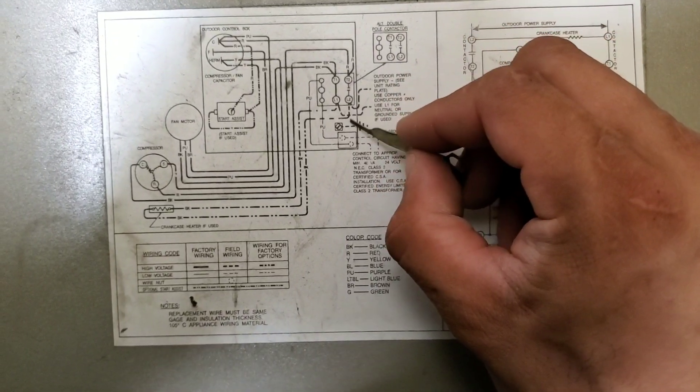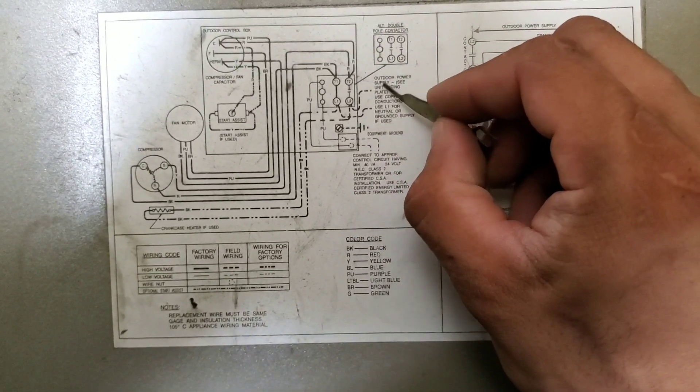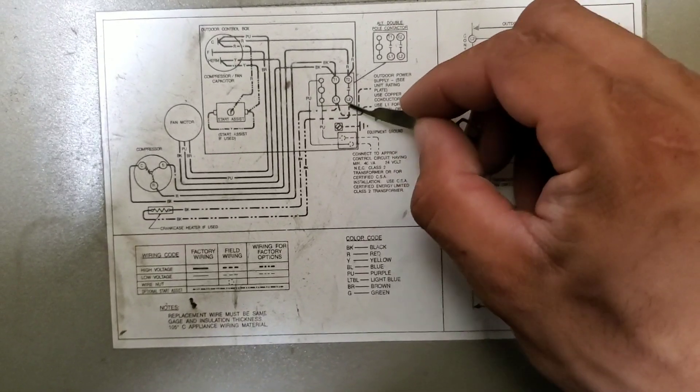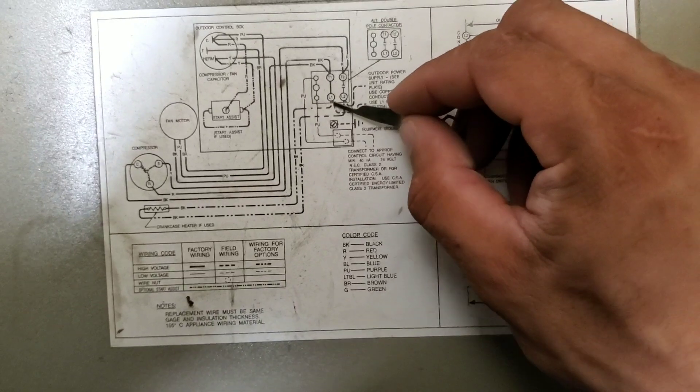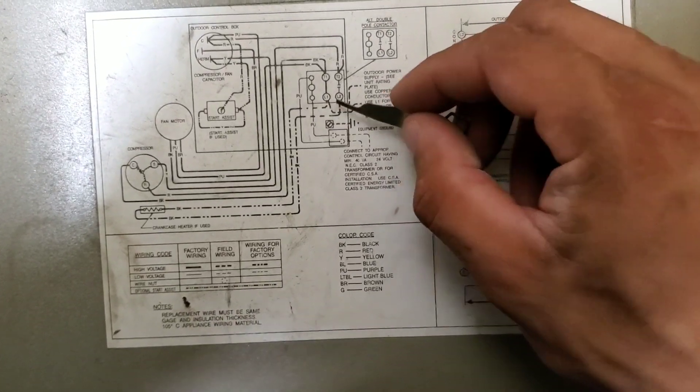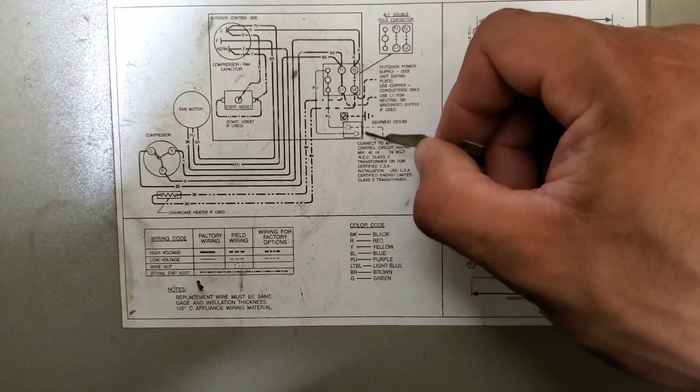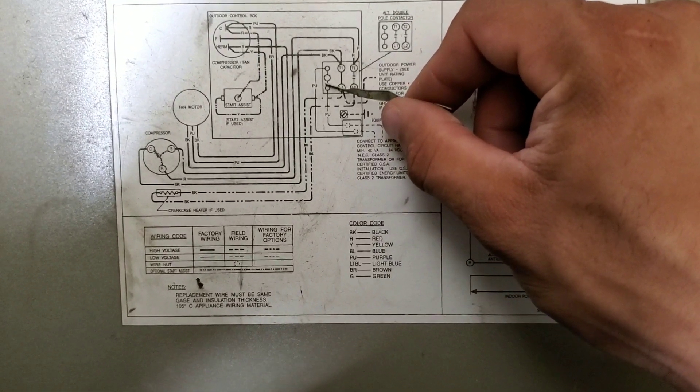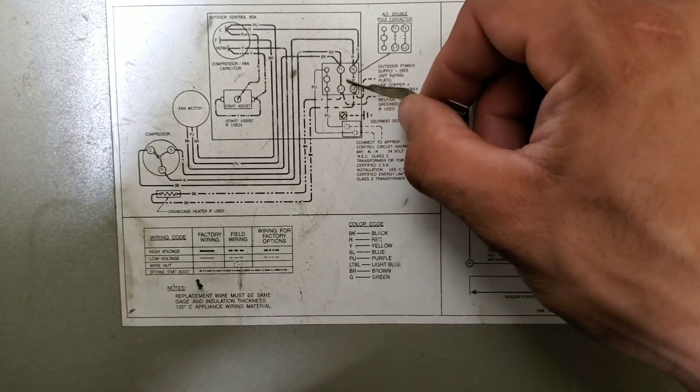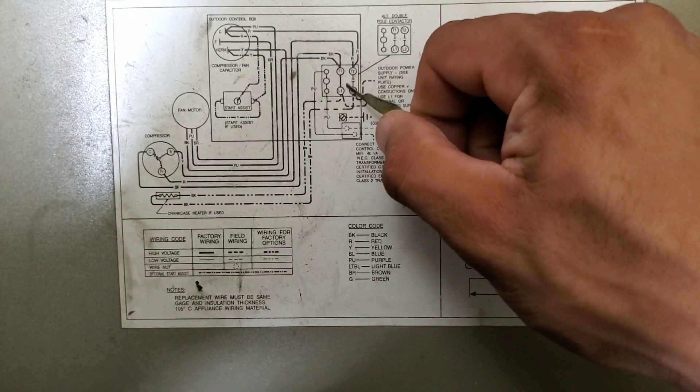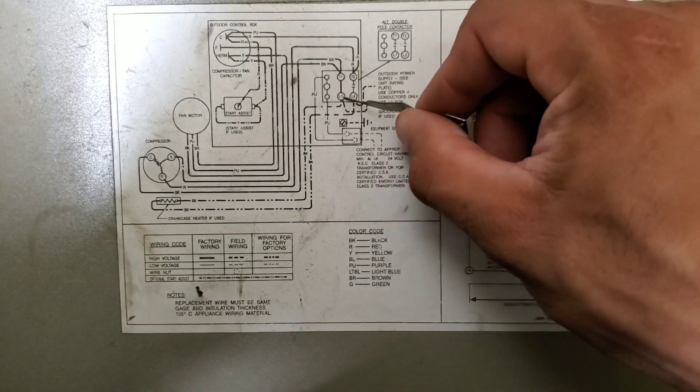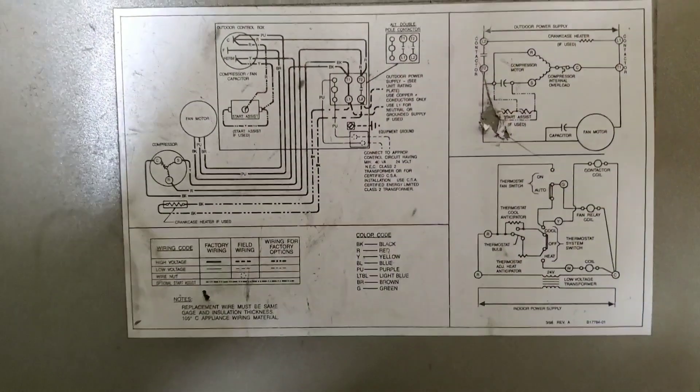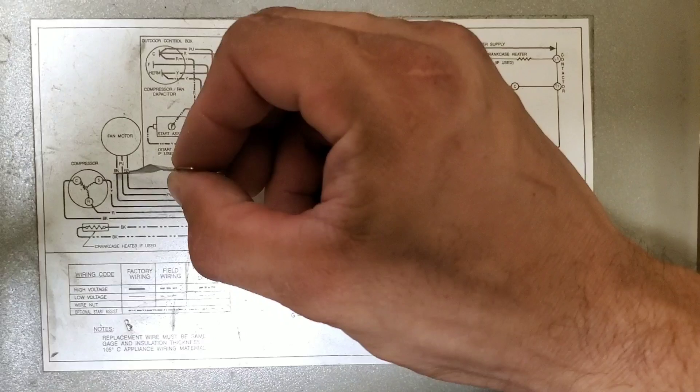Your L1 and L2 are your outdoor power supply, the 240 volts coming in, 120 on each side, that feeds to your contactor. Once your low voltage energizes your contactor, the incoming voltage goes up and feeds to the compressor.